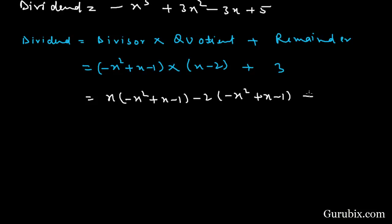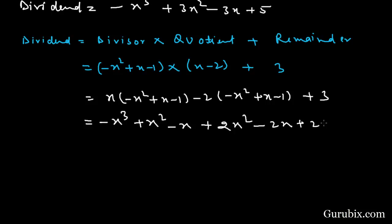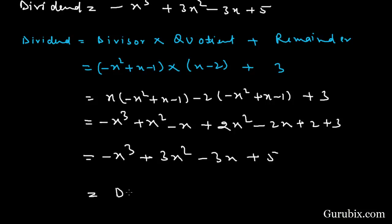This gives us minus x cubed plus x squared minus x, plus 2x squared minus 2x plus 2, plus 3. Combining terms, we get minus x cubed plus 3x squared minus 3x plus 5. We observe that this value equals the dividend, hence the division algorithm is verified. This is the solution of the example, thank you.